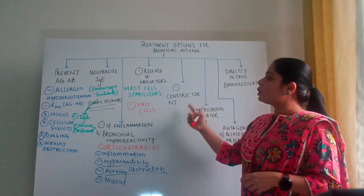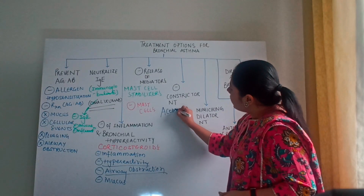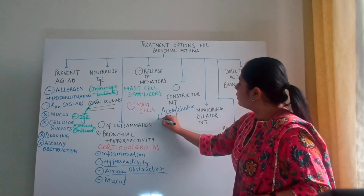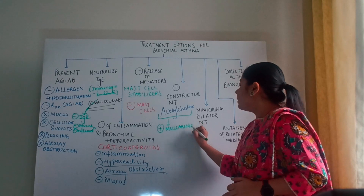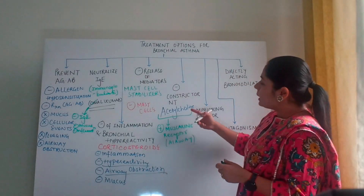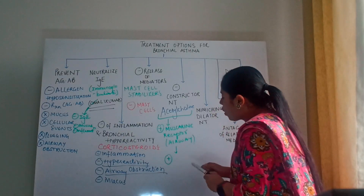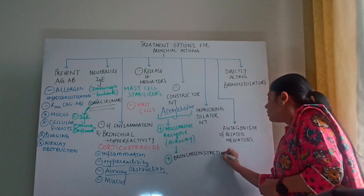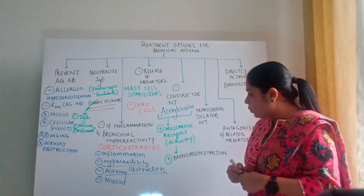Coming back to the next one: inhibition of constrictor neurotransmitter. The constrictor neurotransmitter is acetylcholine. Acetylcholine binds to the muscarinic receptors in the airway passage, and on binding to the muscarinic receptor it has a tendency of triggering bronchoconstriction.